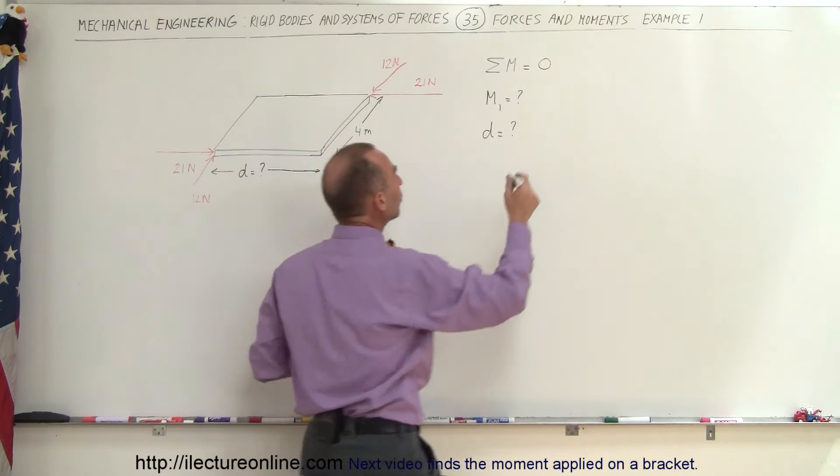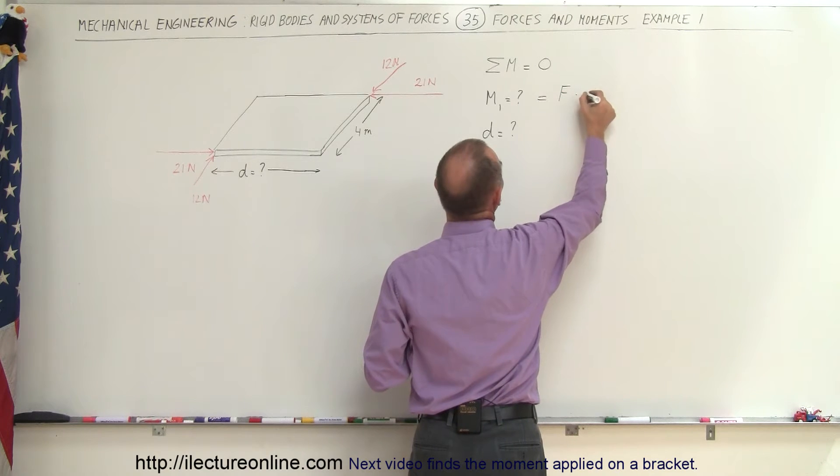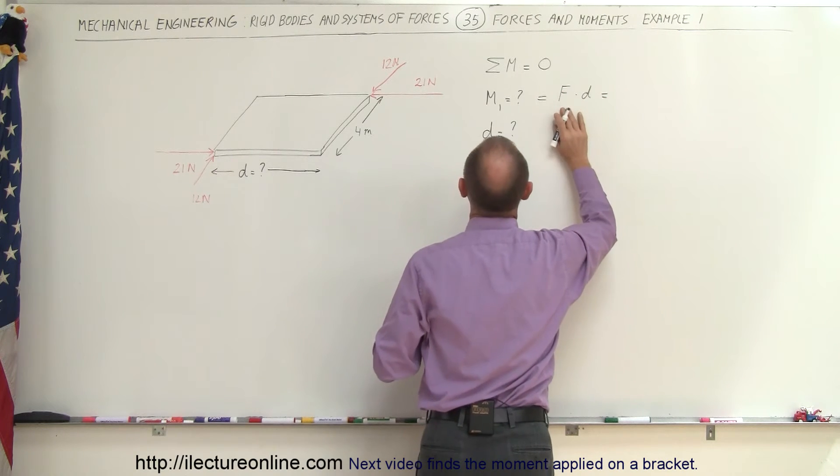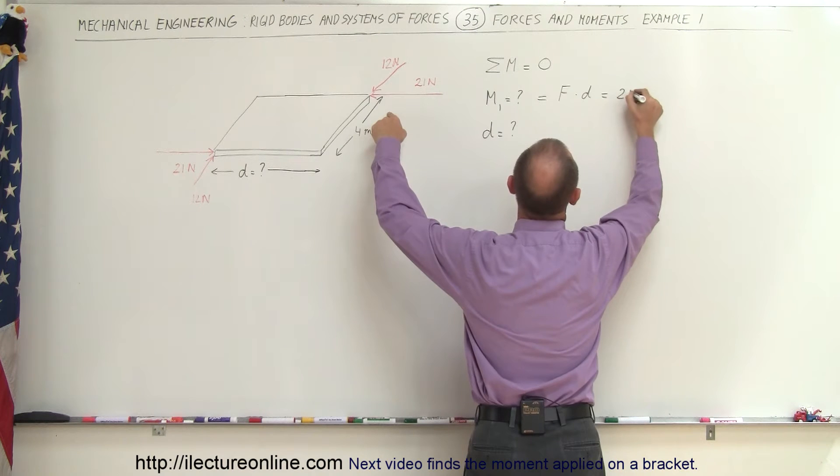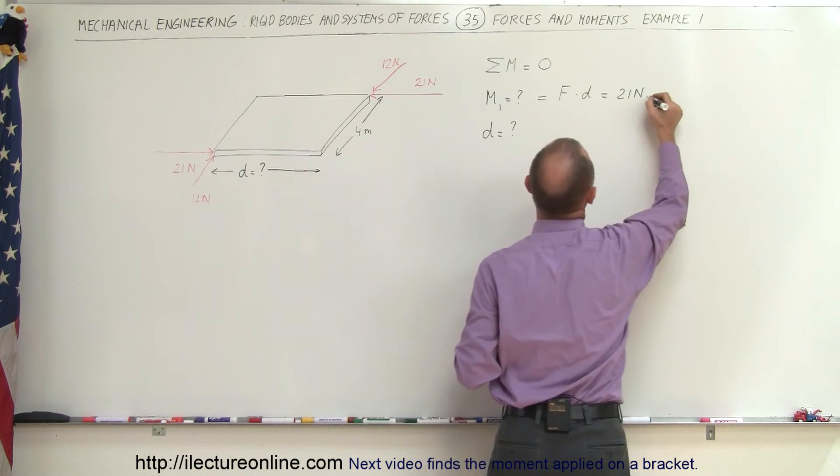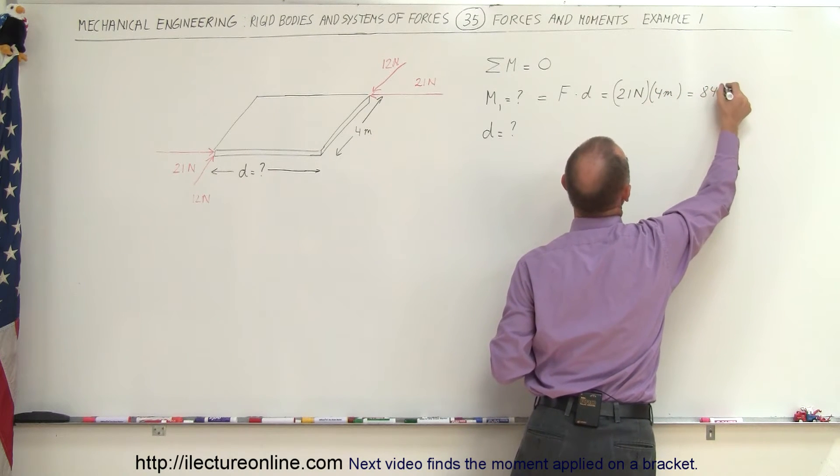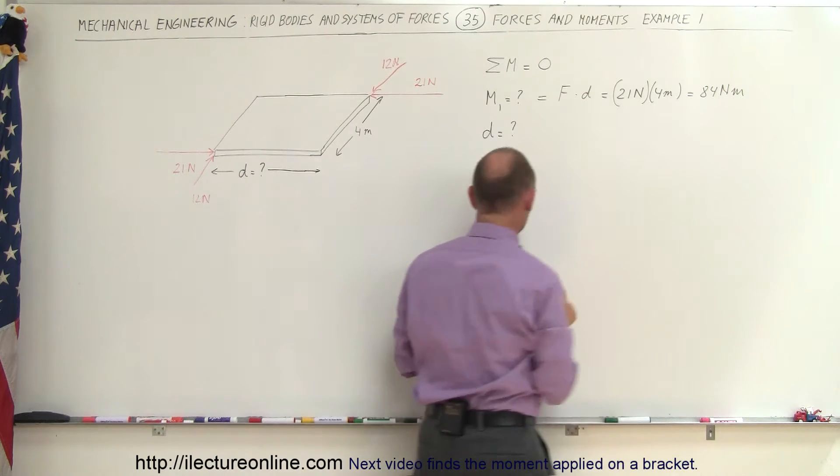We know that the magnitude of the moment is equal to the force times the distance between the two. So in this case, this is equal to the 21 Newton force multiplied times the 4 meter distance, which gives us 84 Newton meters. That's the magnitude of the moment.